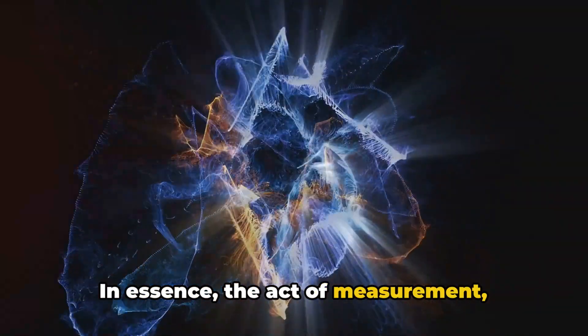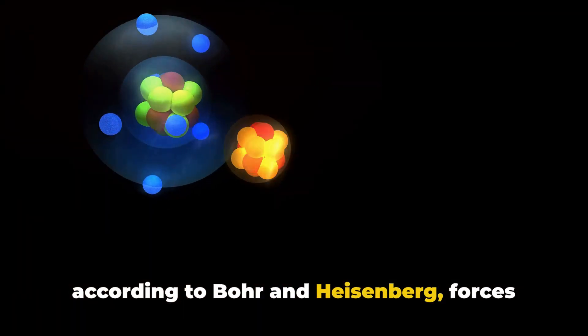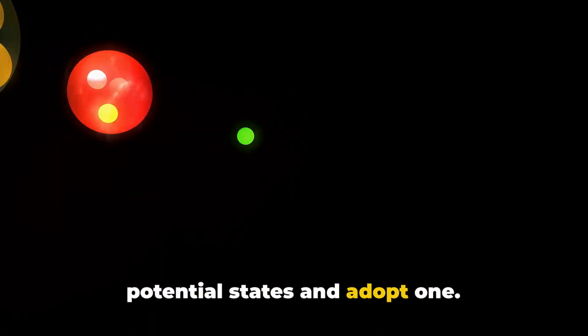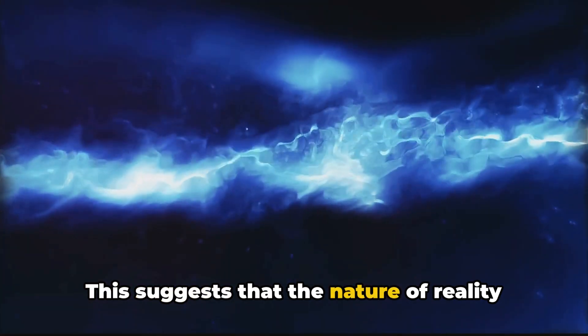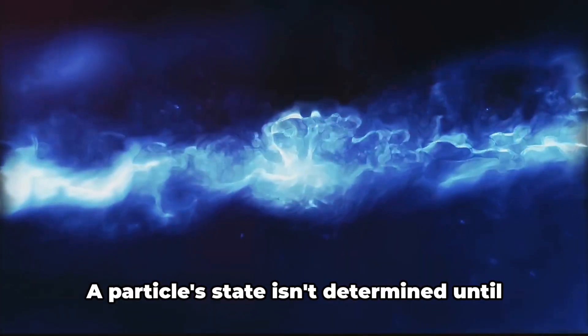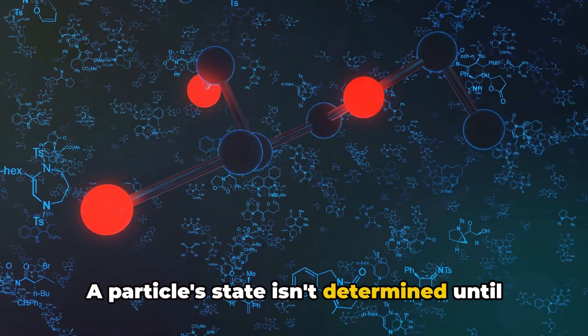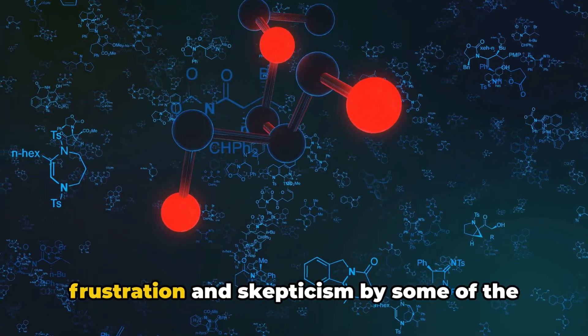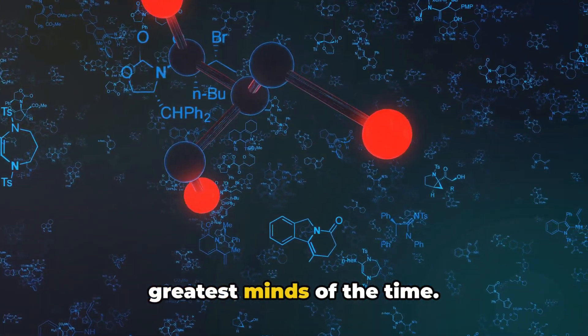In essence, the act of measurement, according to Bohr and Heisenberg, forces the particle to relinquish all other potential states and adopt one. This suggests that the nature of reality at the quantum level is inherently uncertain and random. A particle's state isn't determined until it's measured. This interpretation was met with frustration and skepticism by some of the greatest minds of the time.